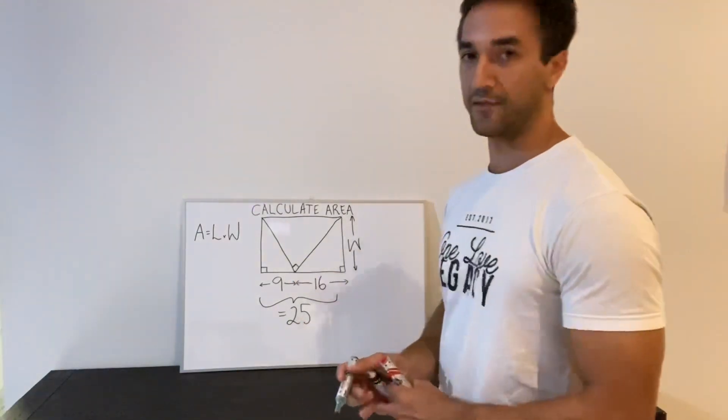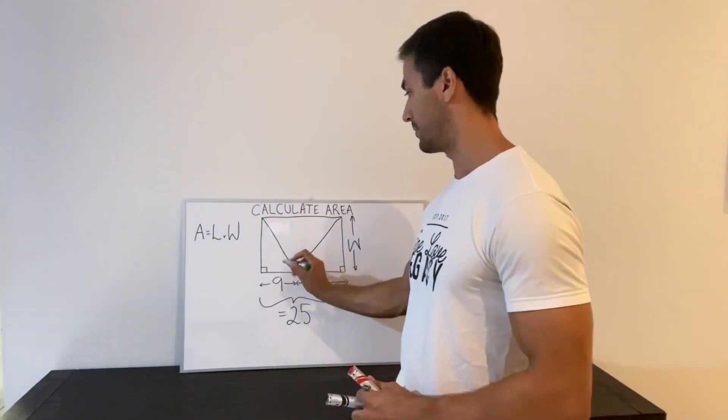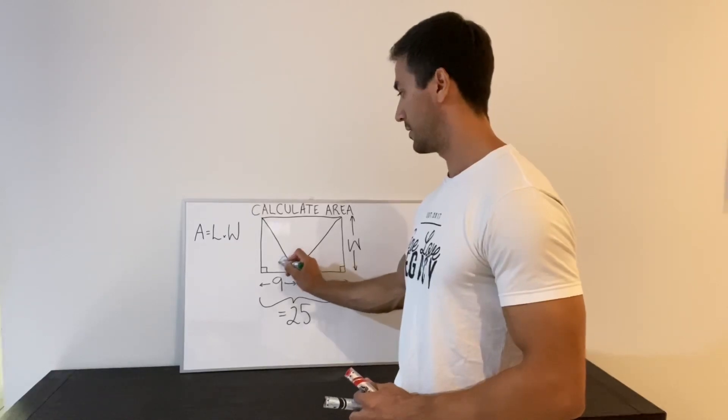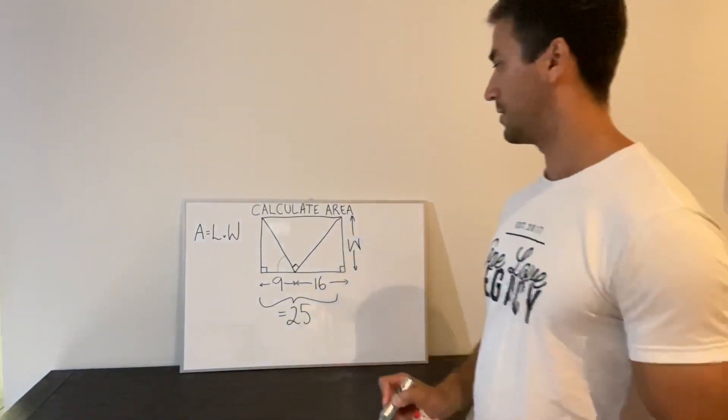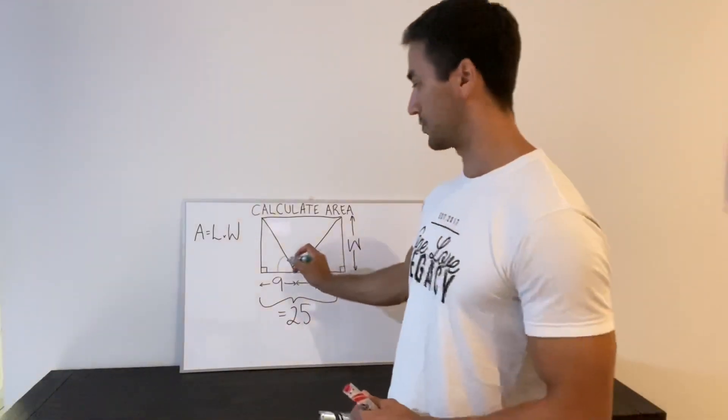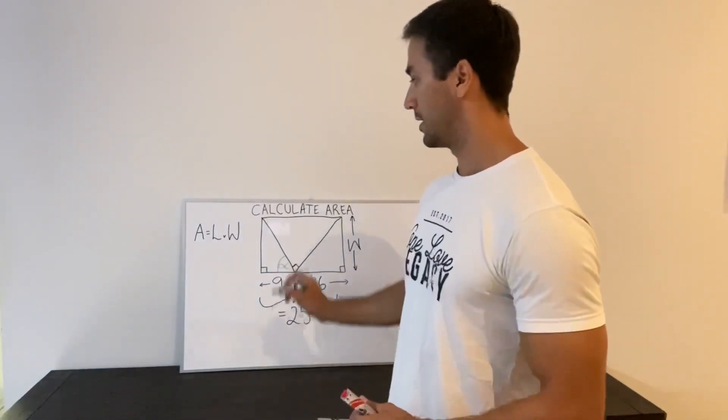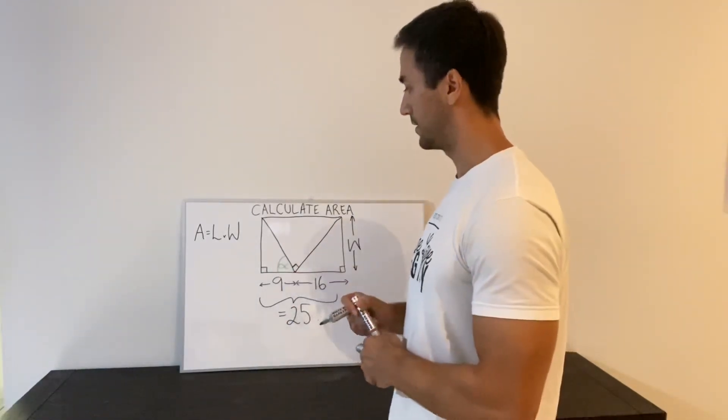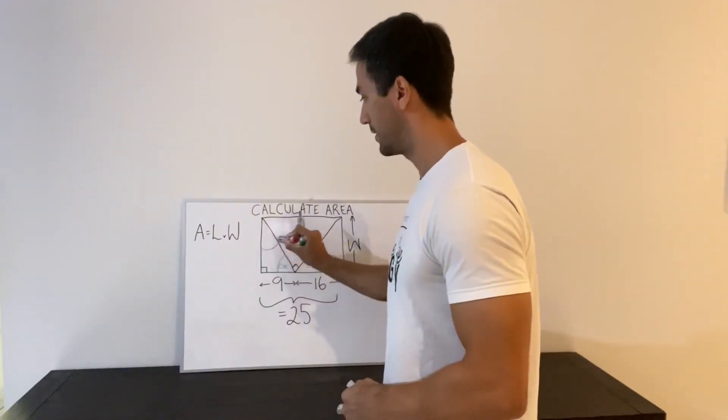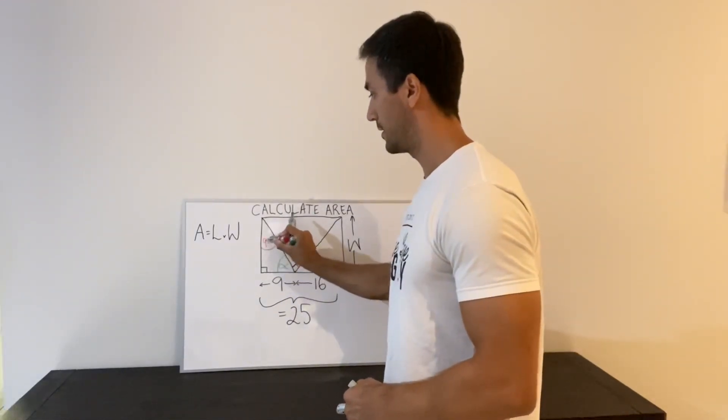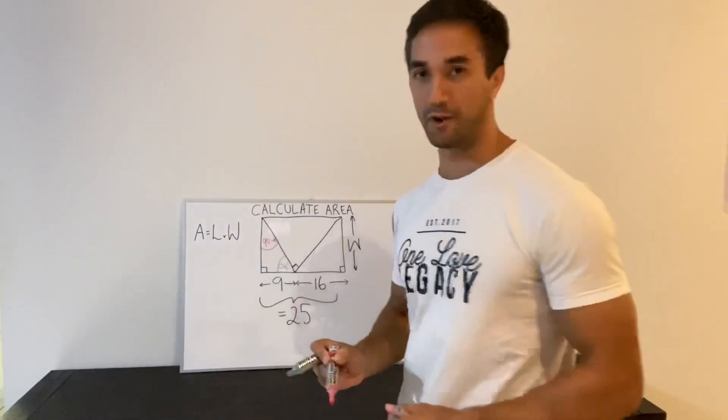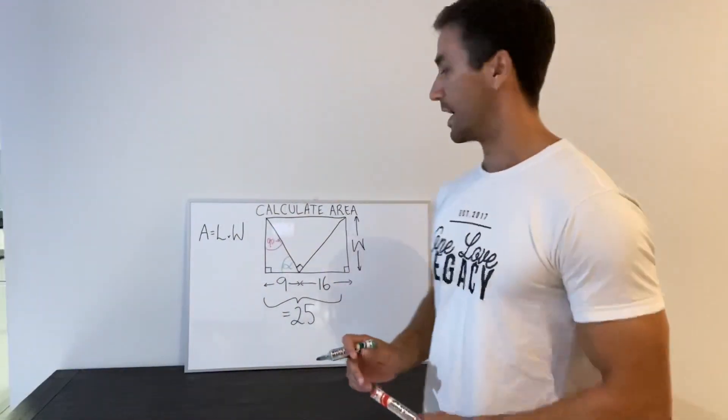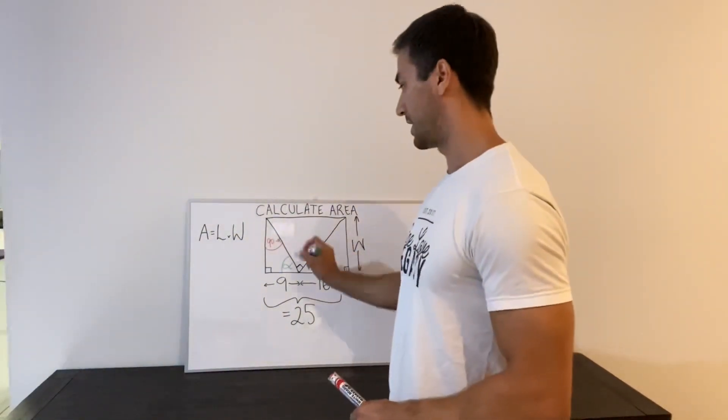So we don't know any of the angles at the moment. But if we call this angle say alpha, then the other angle up here is 90 minus alpha. Now we can work out some of the other angles using basic geometry.